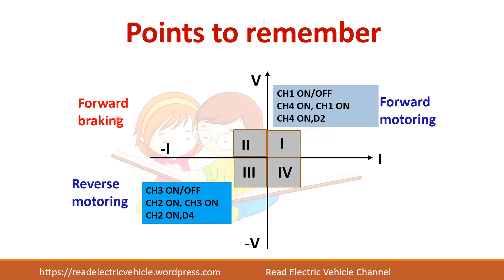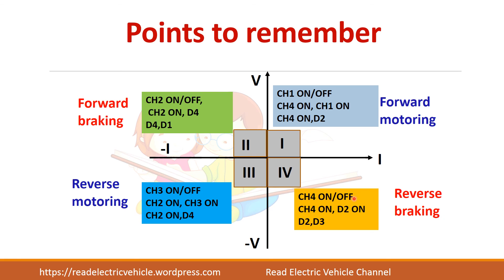For braking operation, only one switch is needed. For forward braking (second quadrant), CH2 is used; for fourth quadrant braking, CH4 is turned on and off. When the switch is on, current freewheels through the associated diode; when it is turned off, current returns to the supply through two diodes.